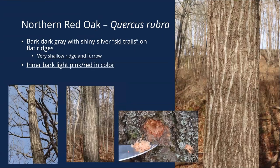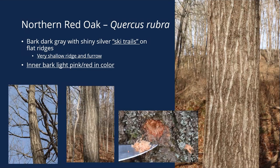The bark is dark gray with those silvery shiny ski trails — those flat ridges that go up and down the bark. You'll consistently see it on most sizes of a red oak, though it may disappear on really big oaks in the lower part of their bark. If you take a knife and dig underneath the bark to get into the inner bark, it's going to be a light pink or almost reddish color. That's important for distinguishing it from black oak.